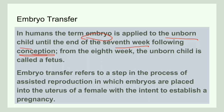After the 7th week is over, from the 8th week, the unborn child is called a fetus. An unborn child until the end of the 7th week, we call it an embryo.